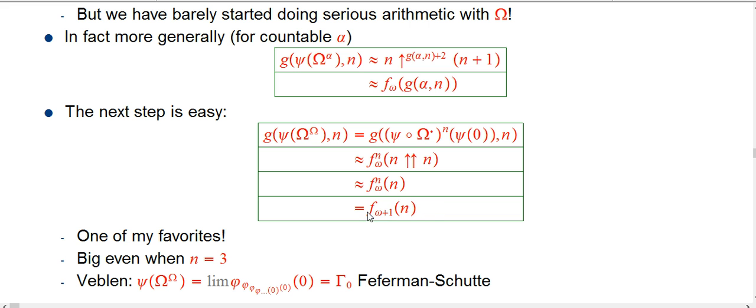f_omega plus 1 of n is one of my favorite functions, because that's one of those ones where even if you put in n equals 3 in here, it is just fantastically huge, because it's the f_omega function applied to 3, and then do it two more times.